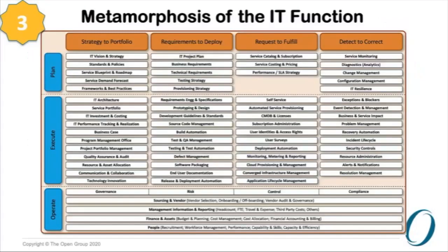The third obstacle — whether IT is ready — is addressed through a variation of IT for IT that we have created for government. The phases will be familiar: strategy to portfolio, requirements to deploy, requests to fulfill, detect to correct — the same phases as IT for IT, but we have identified the next level of detail for what needs to be done. This provides a framework for IT departments within government to transform and modernize their practices, policies, regulatory changes, and technical capabilities to ensure Digital India is realized.